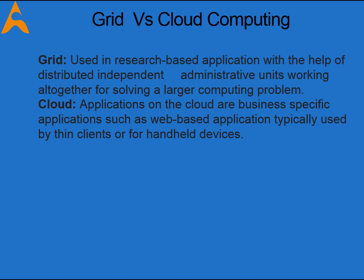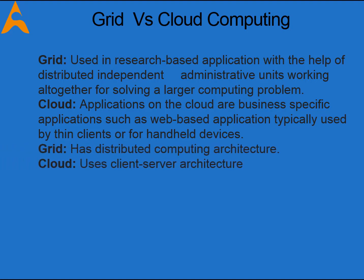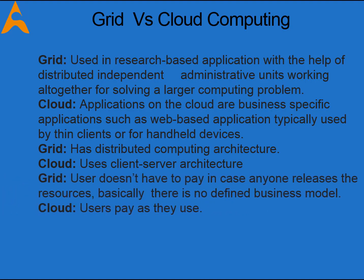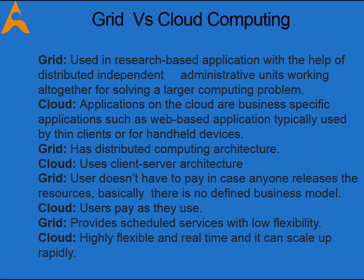Grid is used in research-based applications, with distributed independent administrative units working together to solve a larger computing problem. Cloud applications are business-specific, such as web-based applications typically used by thin clients or handheld devices. Grid has a distributed computing architecture while cloud uses a client-server architecture. Grid users don't pay when they use resources — there is no defined business model — whereas cloud users pay as they use. Grid provides scheduled services with low flexibility, while cloud is highly flexible, real-time, and can scale up rapidly.